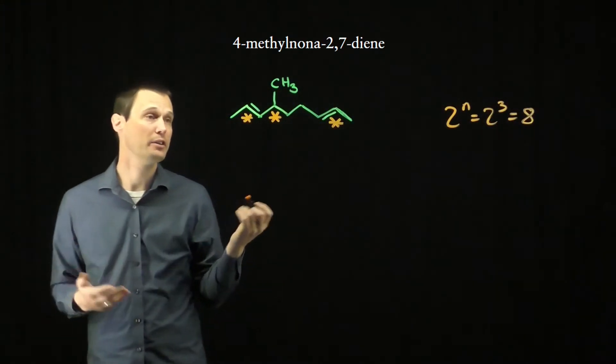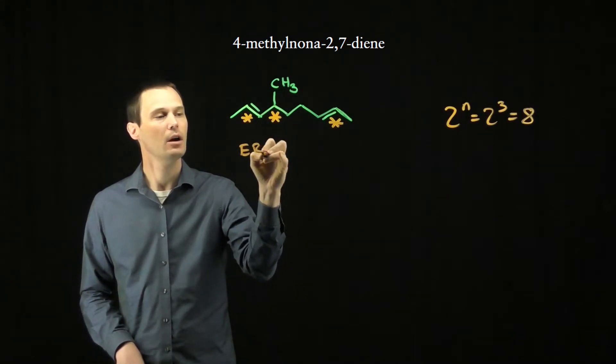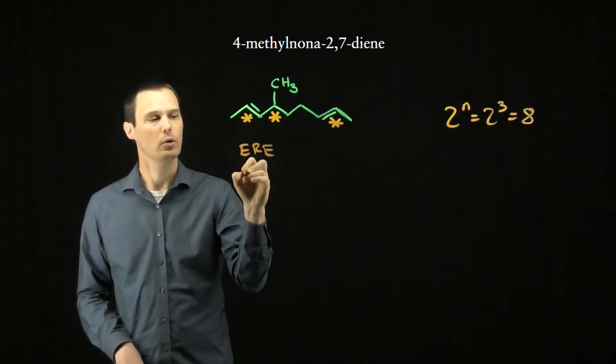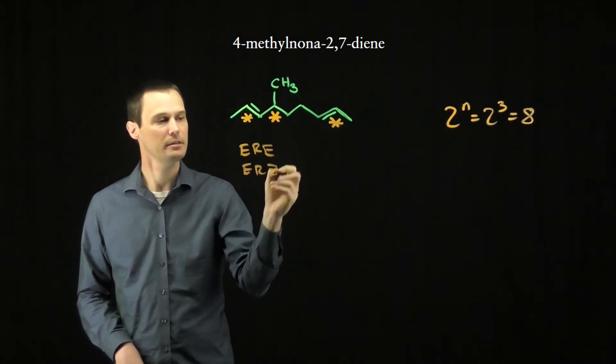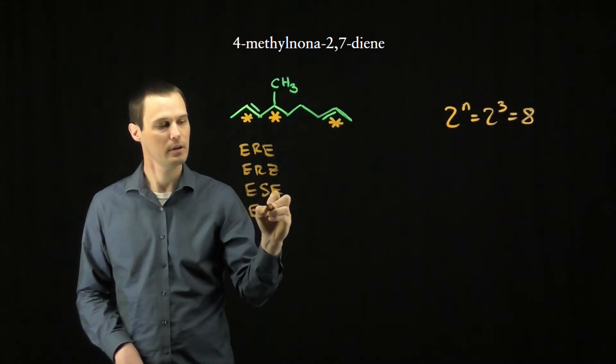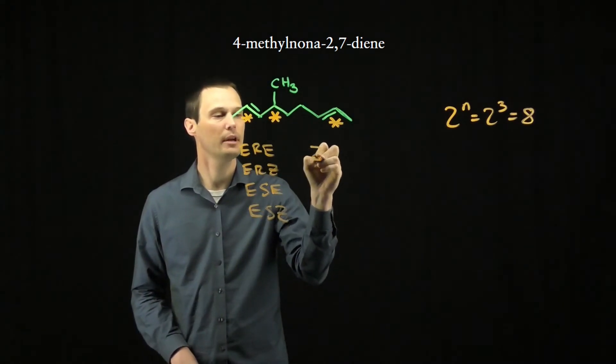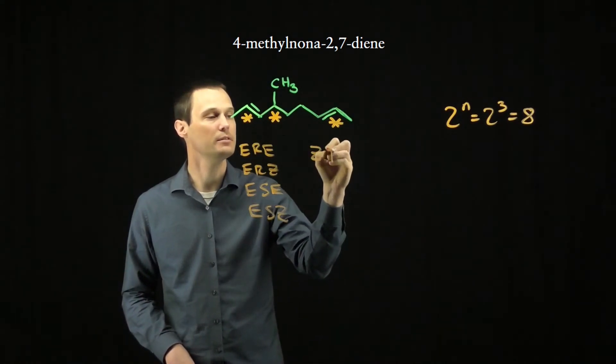We can list them all explicitly. We have the alkene, the stereocenter, and the alkene. Those can be ERE, ERZ, ESE, or ESZ. Those are all if the first alkene is E, and we can have the same combination if the first alkene is Z.